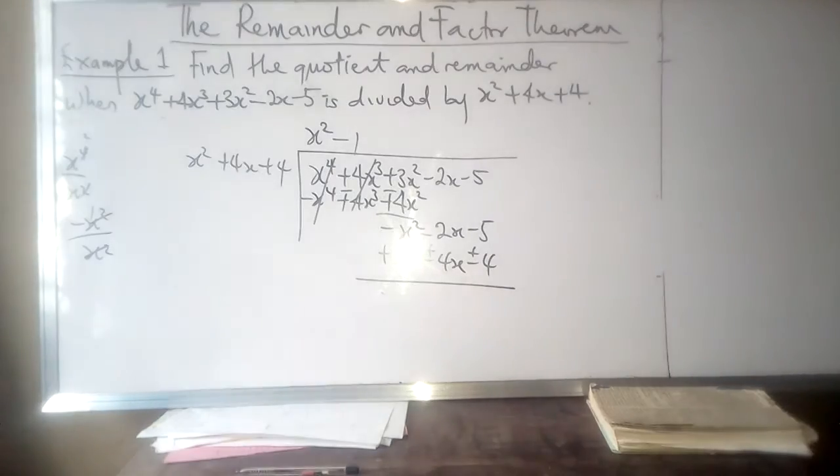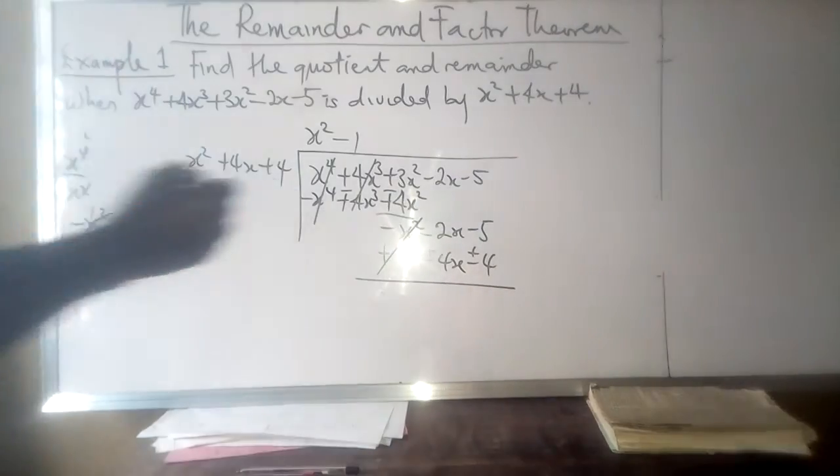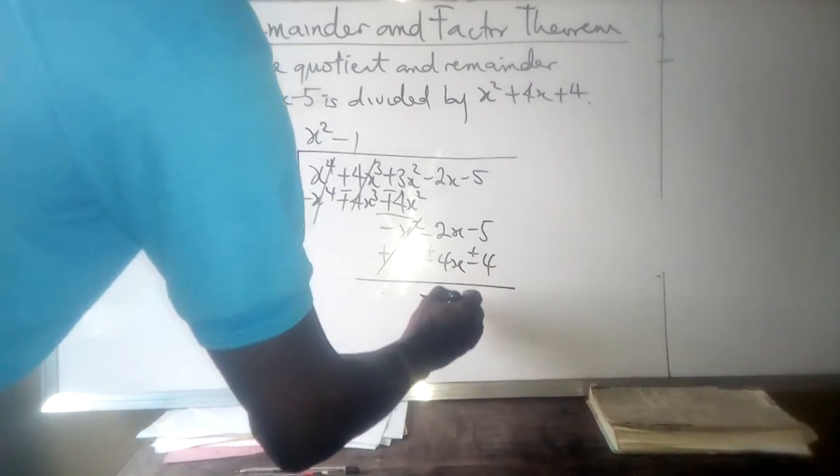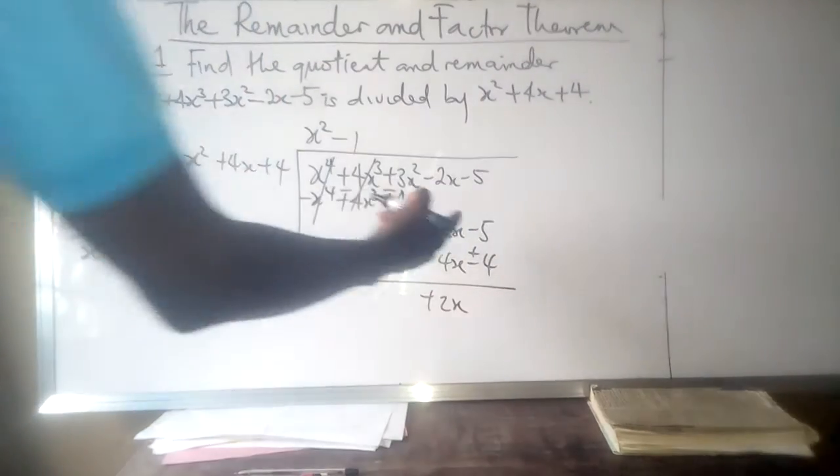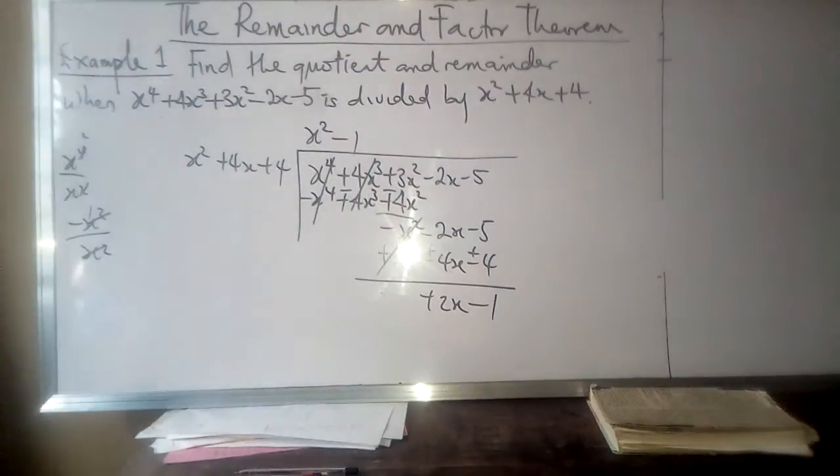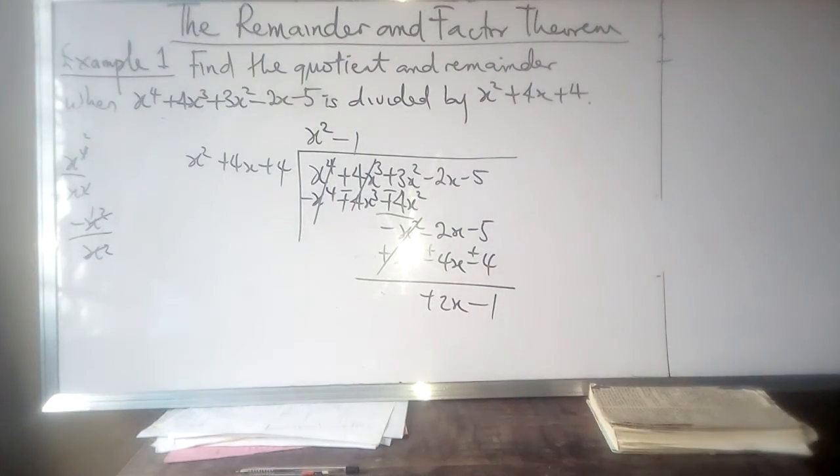-x² plus x² cancels out, -2x plus 4x equals 2x, and -5 plus 4 equals -1. So we are left with 2x - 1.